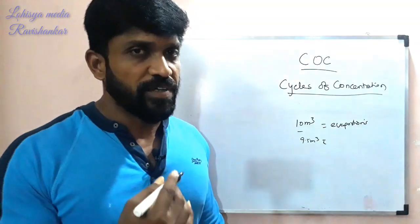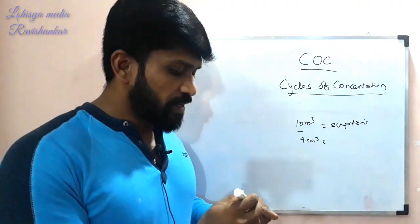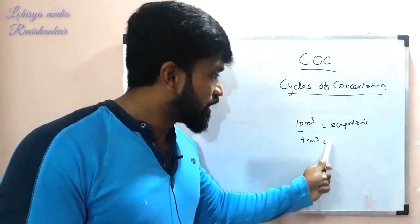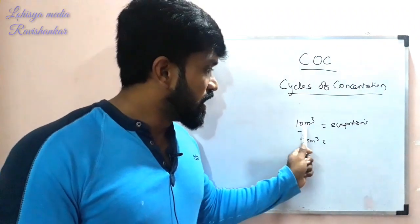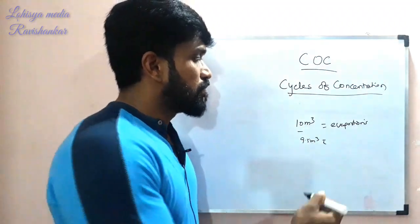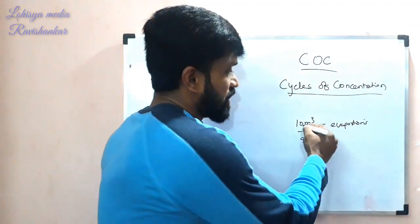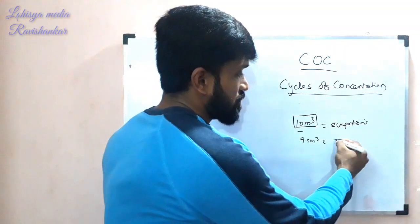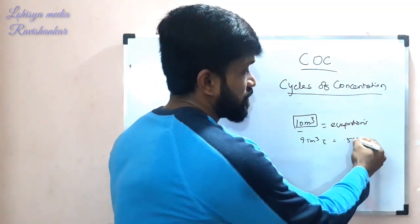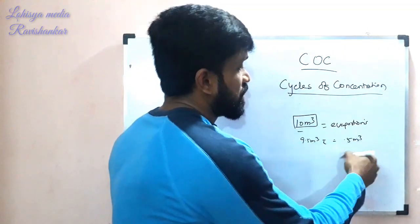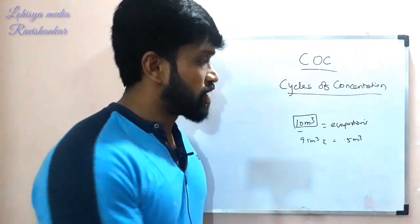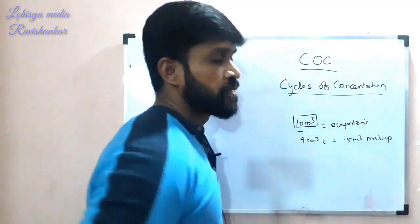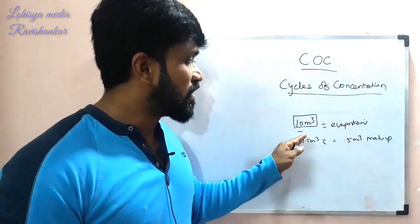After the second cycle, you are down to 8.5 cubic meters. So you need to add makeup water to bring it back to 10 cubic meters. This is the makeup water.